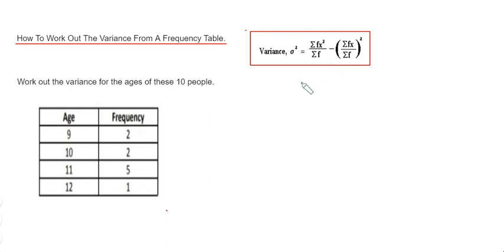Our age will be x and our frequency is f. So the first thing I'm going to do is work out sigma fx squared and sigma fx. Let's start off with sigma fx.